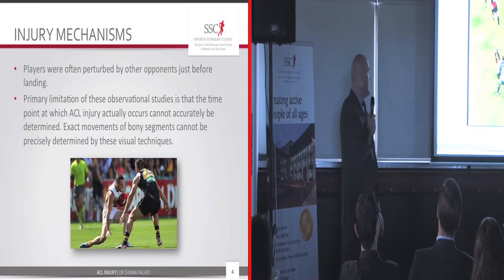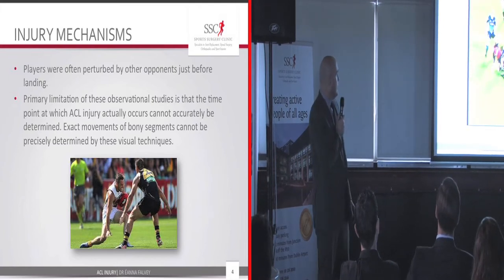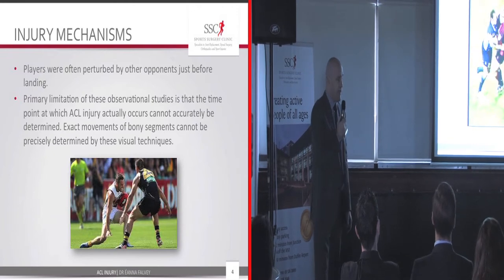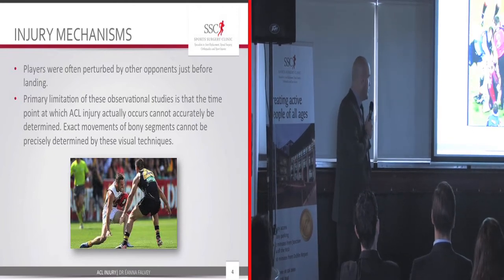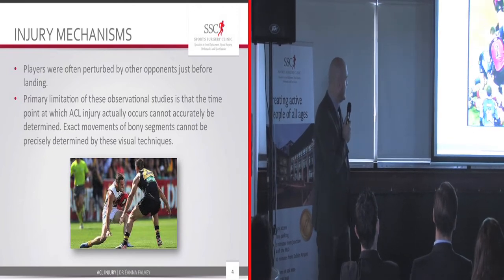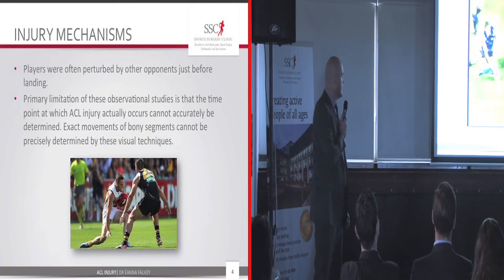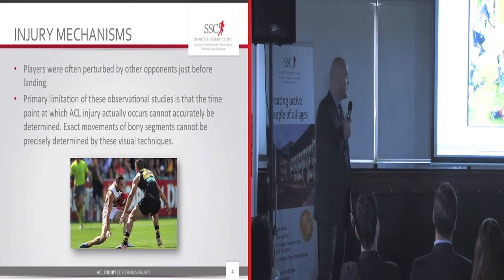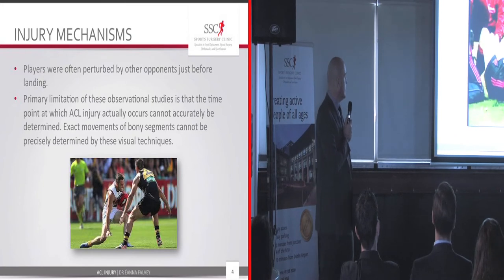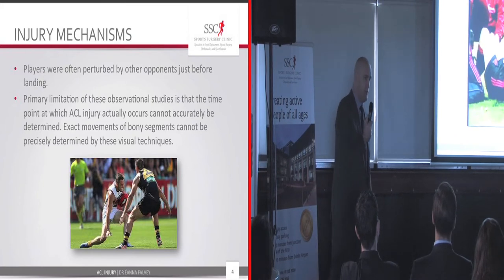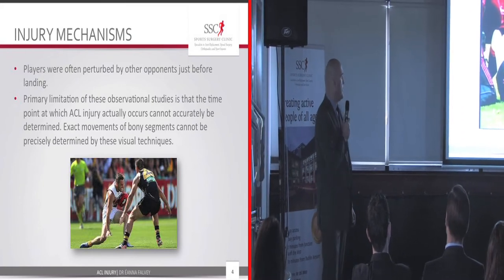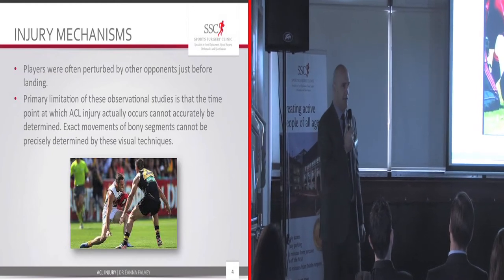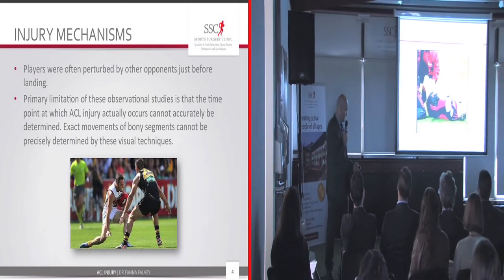In rugby, we quite often see a contact mechanism, and this would be much more common in American football as well. This is the contact scenario where a direct blow from another player caused the motion rather than the player themselves. In this scenario you'd also expect to see an MCL injury, and potentially a capsular injury as well.